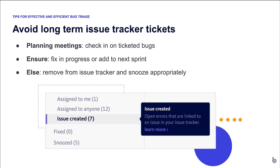Because it's so important to avoid long-term issue tracker tickets, we recommend incorporating BugSnag into your planning meetings. If you work in sprints, as part of your sprint planning process, open up BugSnag as a team and filter down to bugs that have issues created. Make sure every bug matching these criteria is either currently being worked on or will be worked on very shortly. If any issues don't meet that criteria — if something is dragging and unlikely to be worked on soon — remove it from the issue tracker, snooze it appropriately in BugSnag, with the peace of mind that it will return to 'for review' if it ever becomes impactful enough.